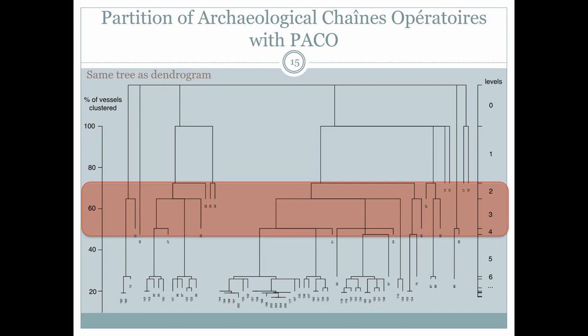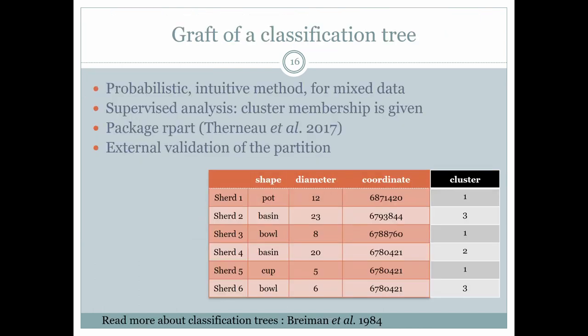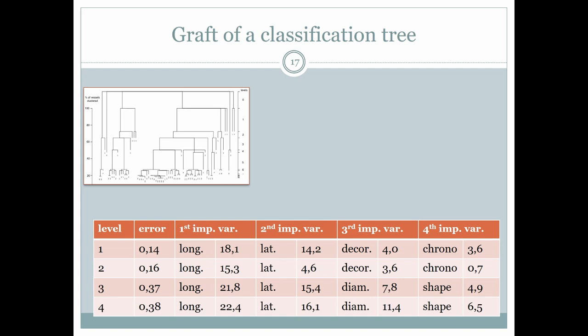I want to use this data to define at which level the clusters have meaning. To achieve this I chose a probabilistic method which is intuitive and accepts both quantitative and categorical data: the classification tree. This is a supervised analysis where the algorithm tries to explain the clusters using the external descriptors of each row. It is supplied by the R package rpart. I run it for each cut that I want to test on the tree.